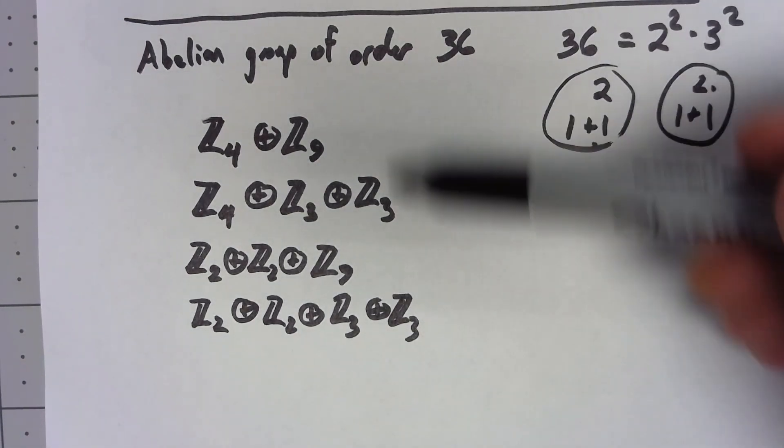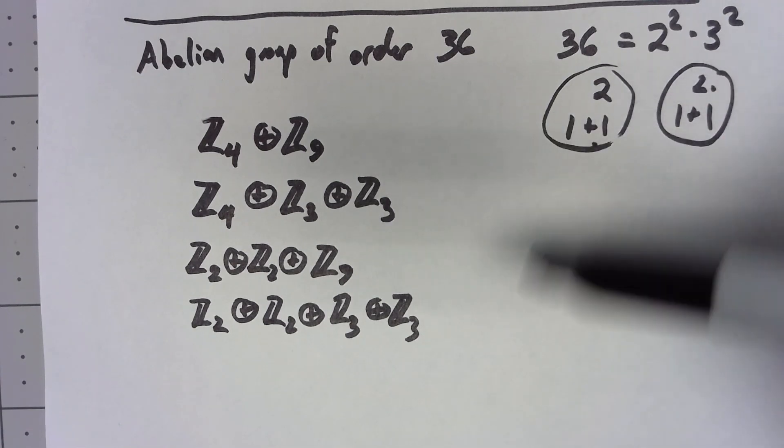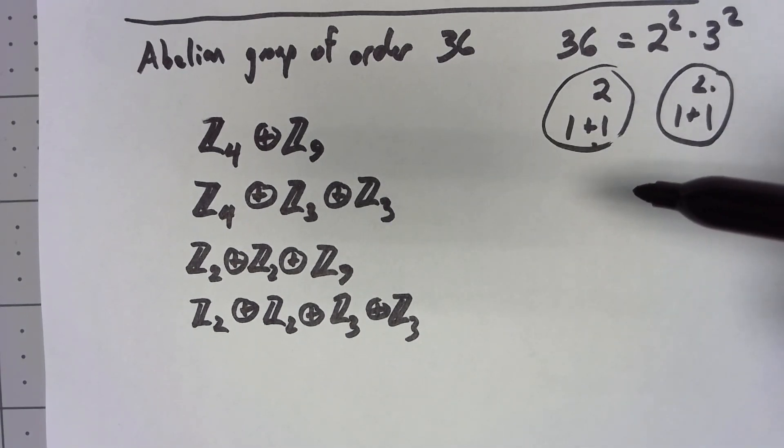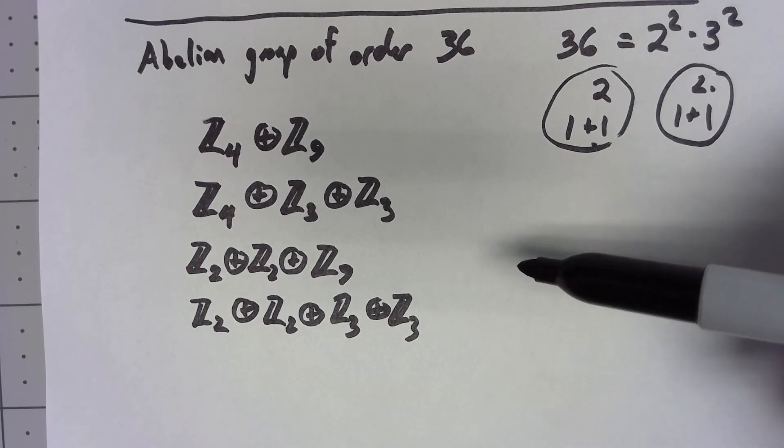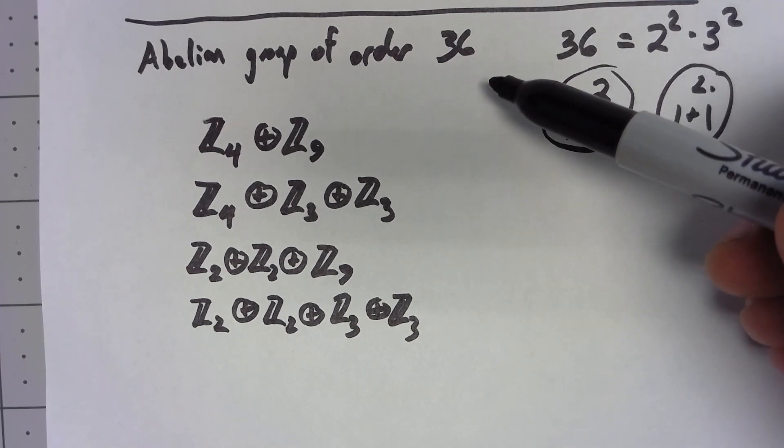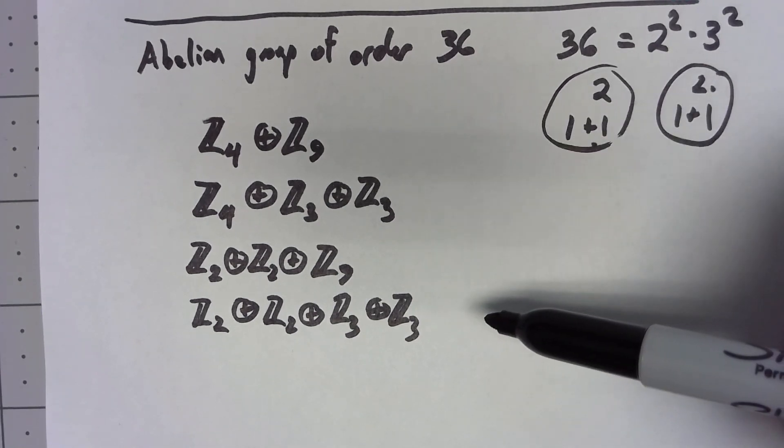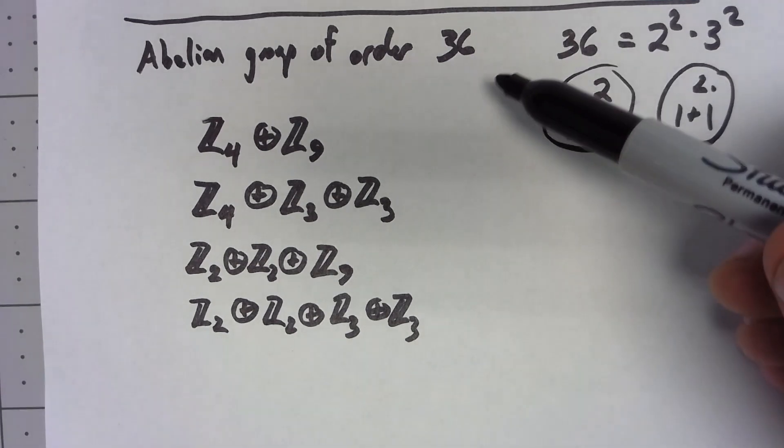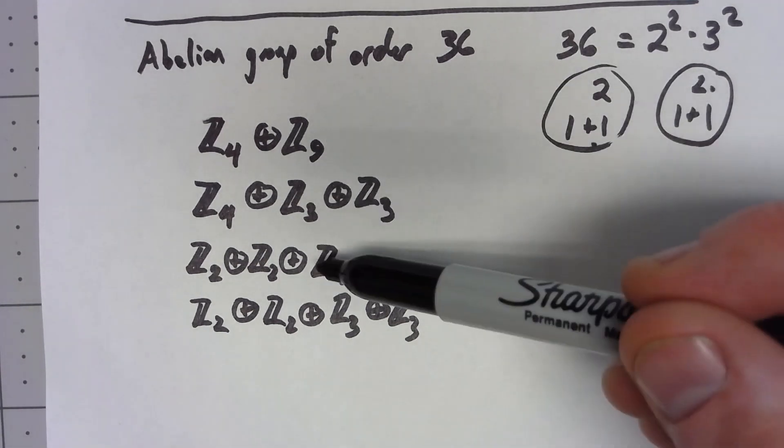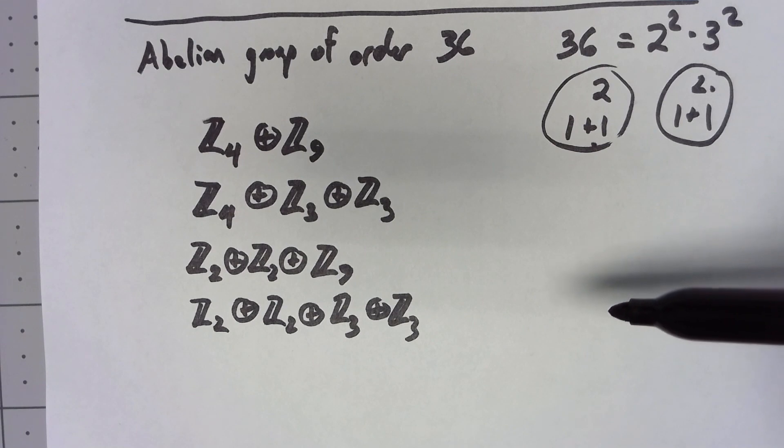These four possibilities are all not isomorphic to each other, but these are the only possibilities for what an abelian group of order 36 could be isomorphic to. Every abelian group of order 36 has to be isomorphic to one of these four possibilities.